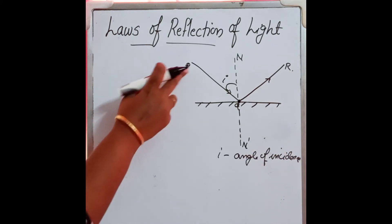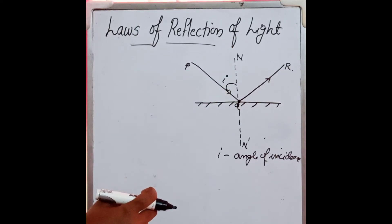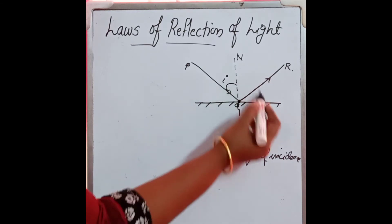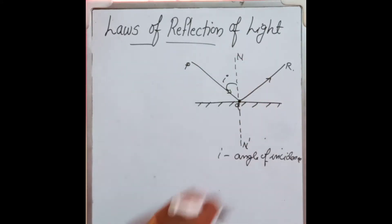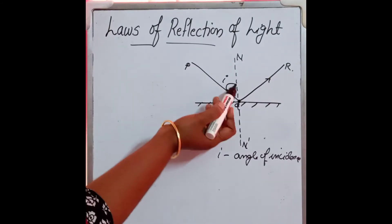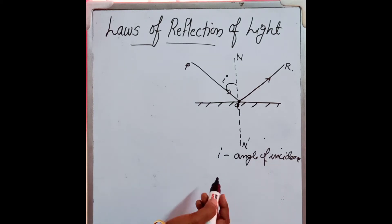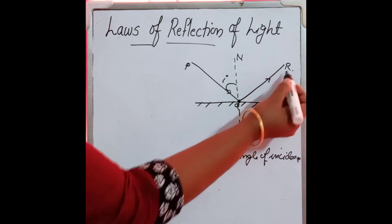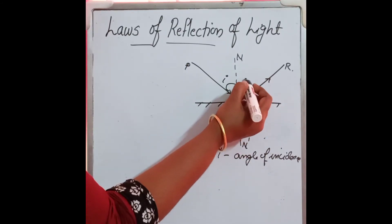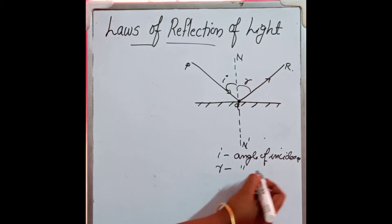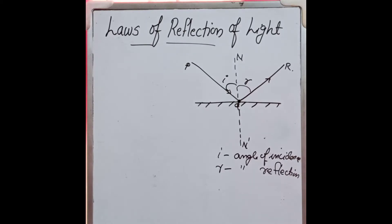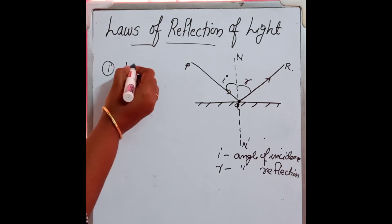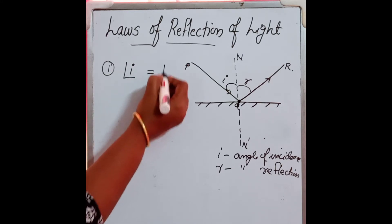The angle of incidence I is the angle between the incident ray and the normal. To draw a normal, place the protractor over the surface and draw at 90 degrees along point Q. The angle between the normal and the reflected ray is denoted as R — this is called the angle of reflection. So, we have two angles: I and R. As for the first law of reflection, the first law states that the angle of incidence is always equal to the angle of reflection.